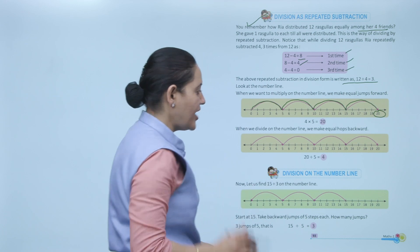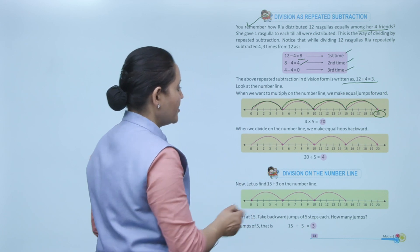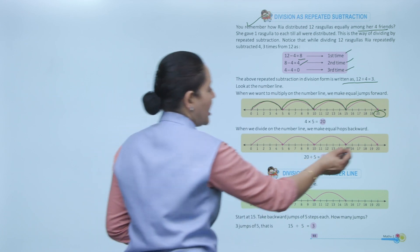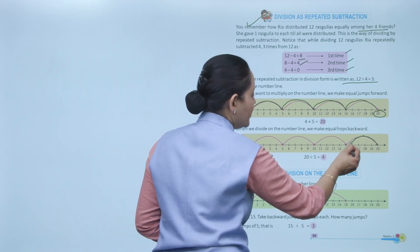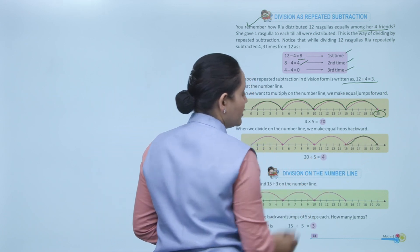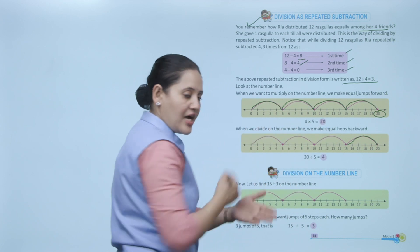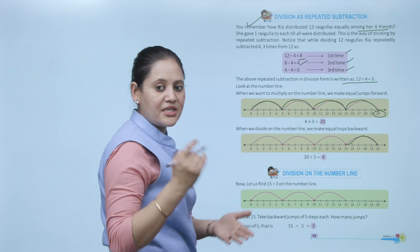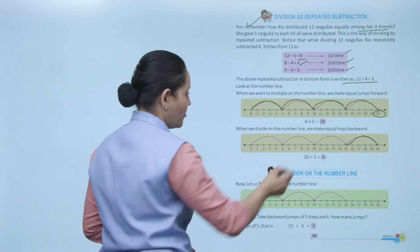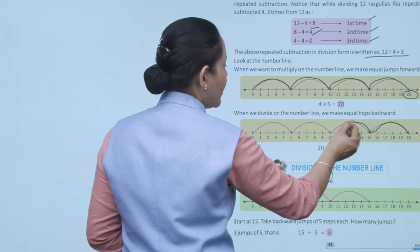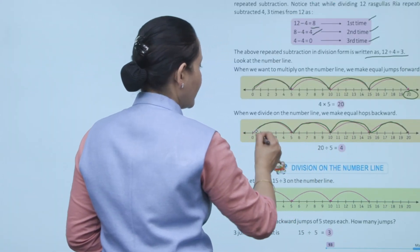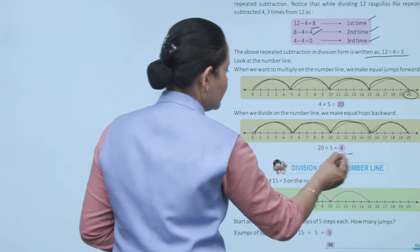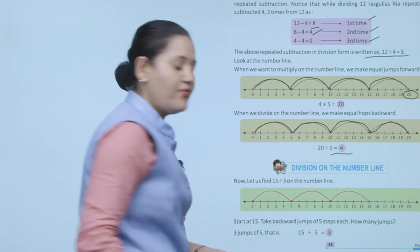When we divide on the number line, we make equal hops backward until we reach 0. For 20 divided by 5, we jump 5 places backward each time: 1, 2, 3, 4 times — so the answer is 4.